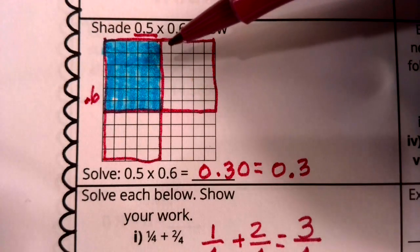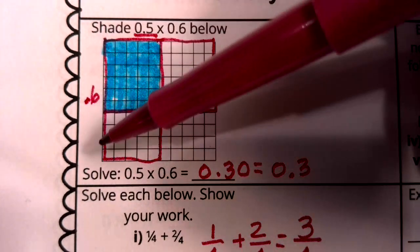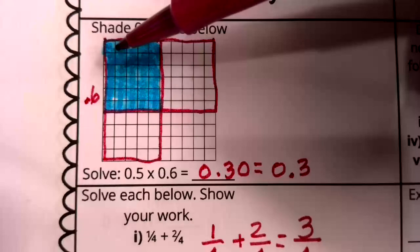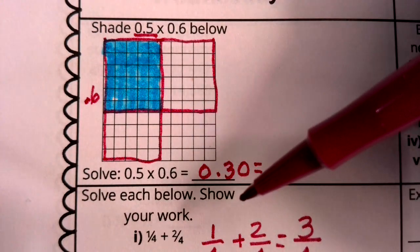So this is five tenths. Then I could look horizontally and I could say how many of these rows have shading? Six have shading. So it's six tenths, right?